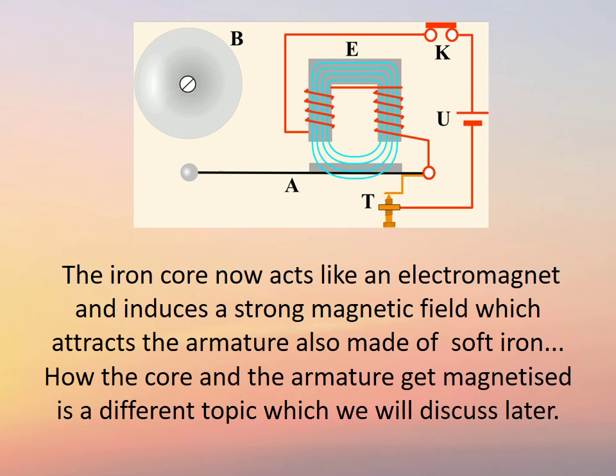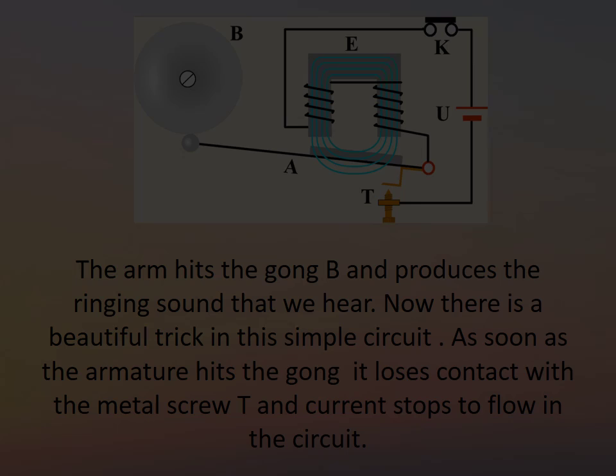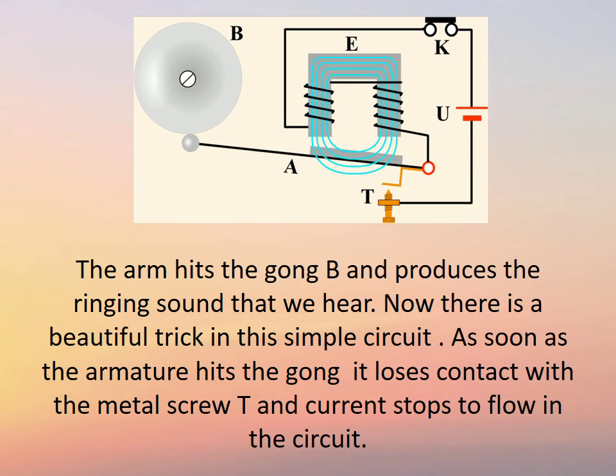The magnetic field attracts the armature, also made of soft iron. How the core and the armature get magnetized is a different topic which we will discuss later. The arm hits the gong B and produces a ringing sound that we hear.